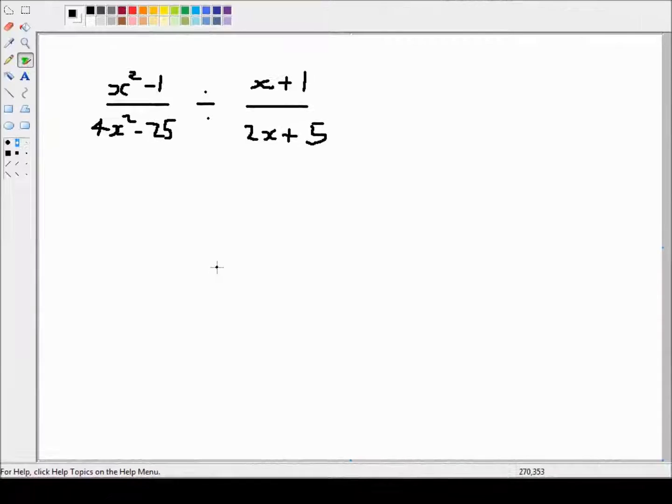So how did you get on with that question? What we're asked is x squared minus 1 over 4x squared minus 25 divided by x plus 1 over 2x plus 5.